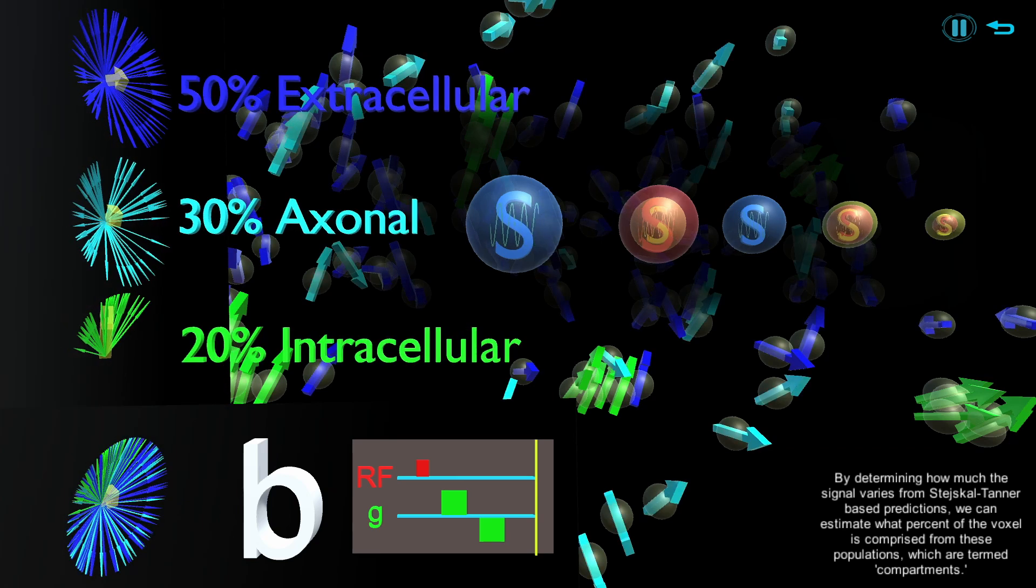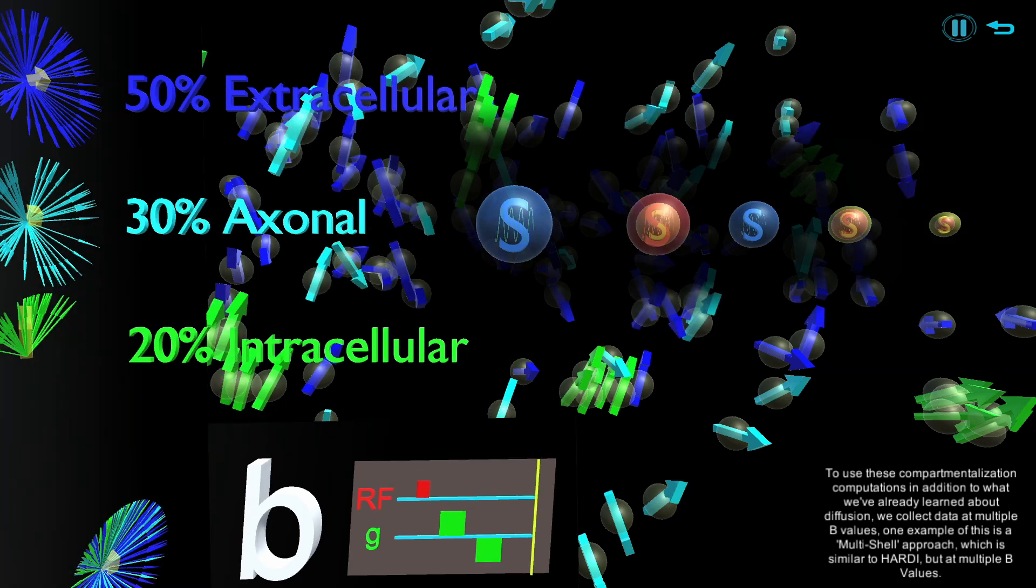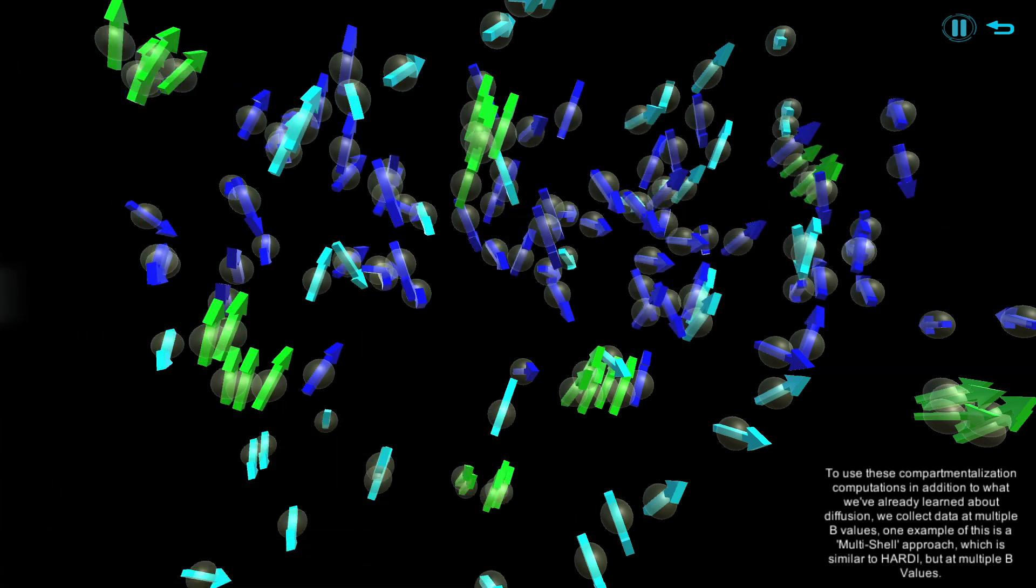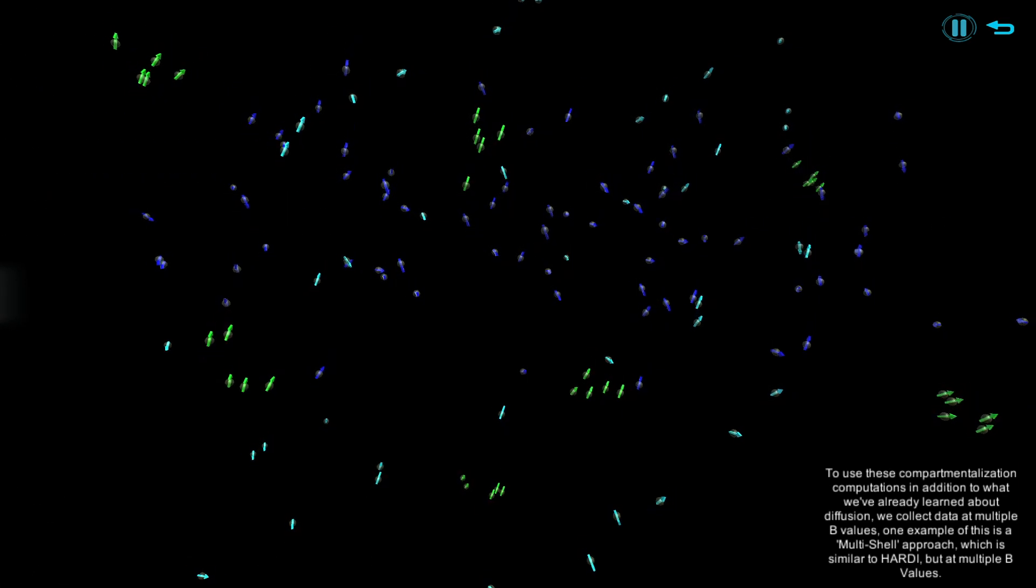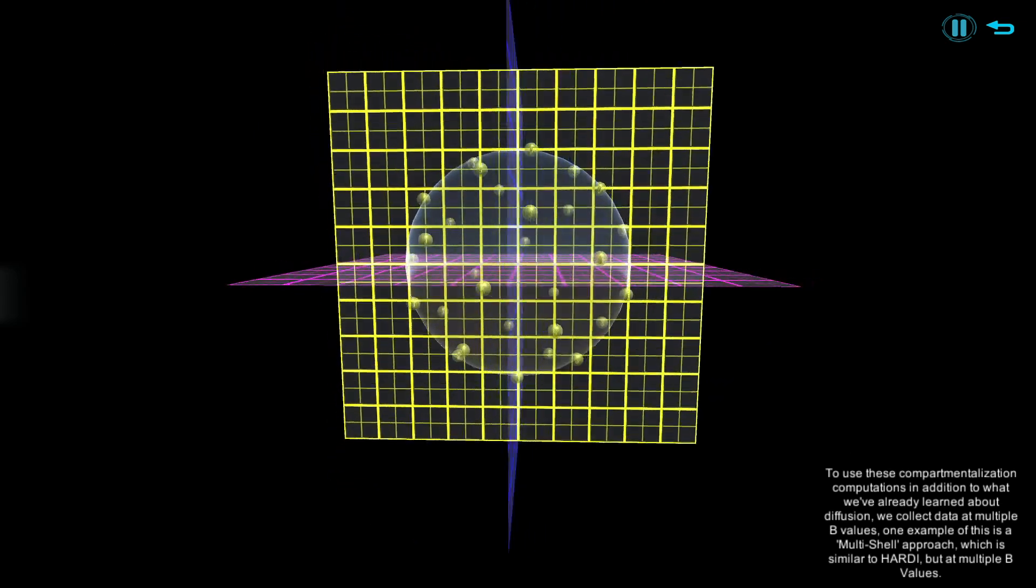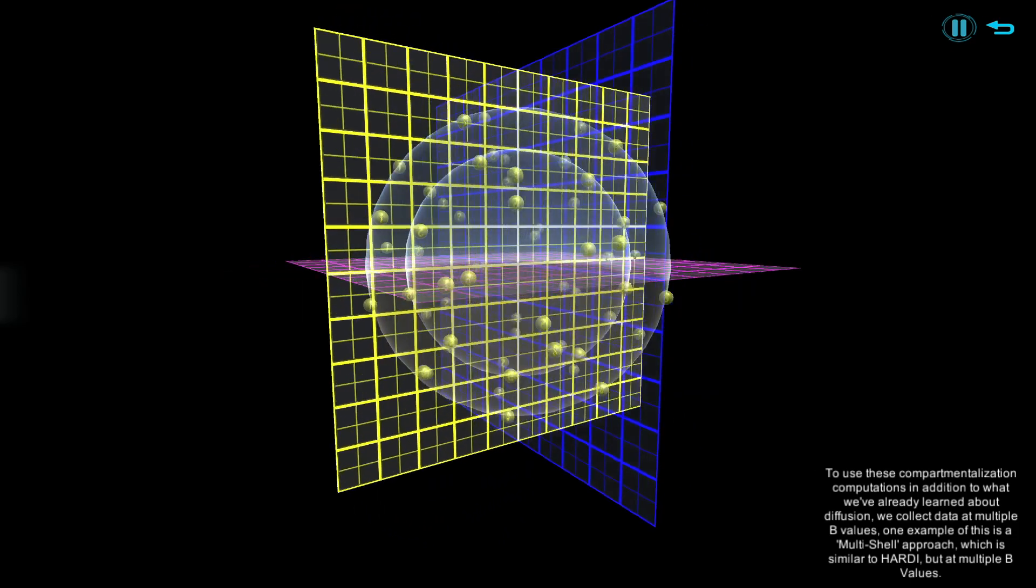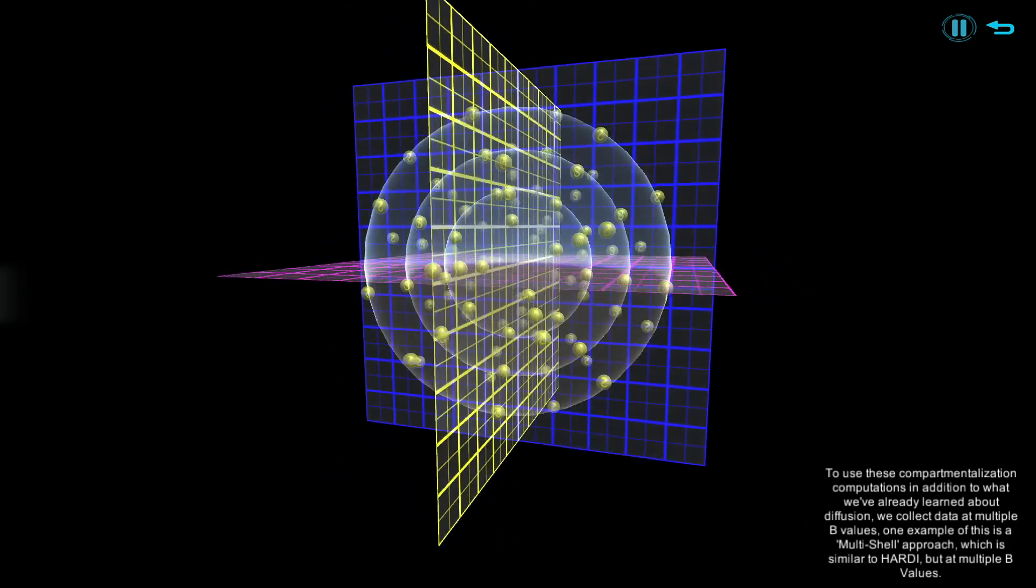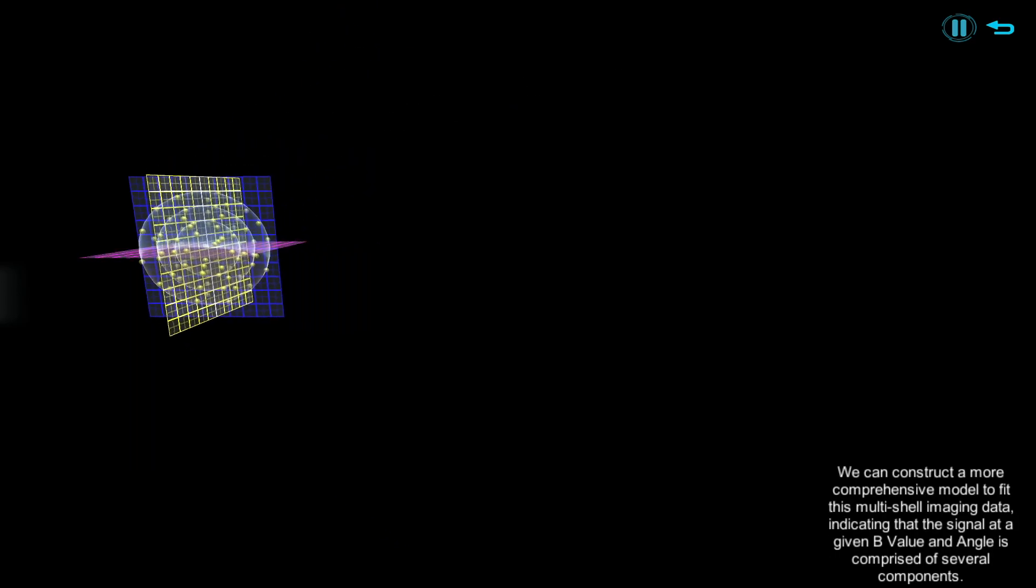To use these compartmentalization computations in addition to what we've already learned about diffusion, we collect data at multiple b-values. One example of this is a multi-shell approach, which is similar to HARDI but at multiple b-values. We can construct a more comprehensive model to fit this multi-shell imaging data, indicating that the signal at a given b-value and angle is comprised of several components.